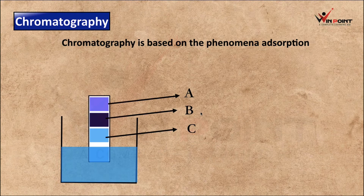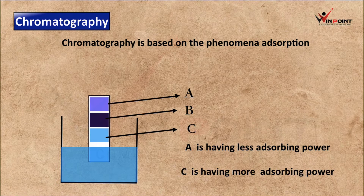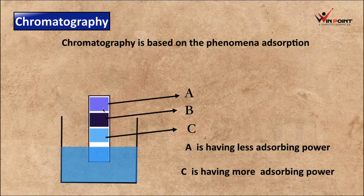The reason for this separation is the difference in adsorbing power. A has less adsorbing power, so it goes up and accumulates at the top. C has more adsorbing power, so it accumulates on the surface of the filter paper as soon as possible and separates at the bottom. This is the working of chromatography.